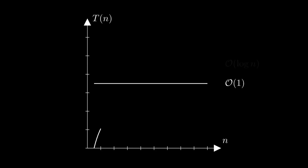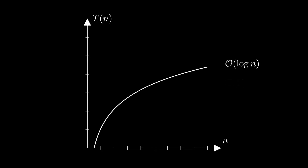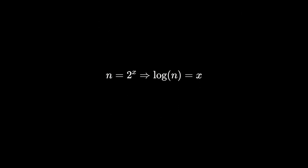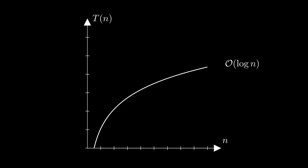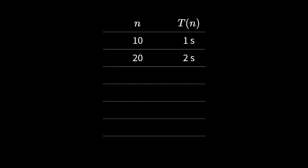A running time we haven't encountered before is logarithmic running time. When talking about algorithms, by logarithm we usually mean the binary logarithm. As a reminder, the binary logarithm of a number n indicates to what power the number 2 must be raised in order to get n. For example, the number 8 is 2 to the power of 3, therefore the binary logarithm of 8 is 3. If an algorithm has logarithmic running time, this means intuitively: if we double the input size, the running time only increases by a constant value. Say my algorithm takes 1 second for an input size of 10 and 2 seconds for an input size of 20 — then it takes 3 seconds for 40 values, 4 seconds for 80 values, and so on.